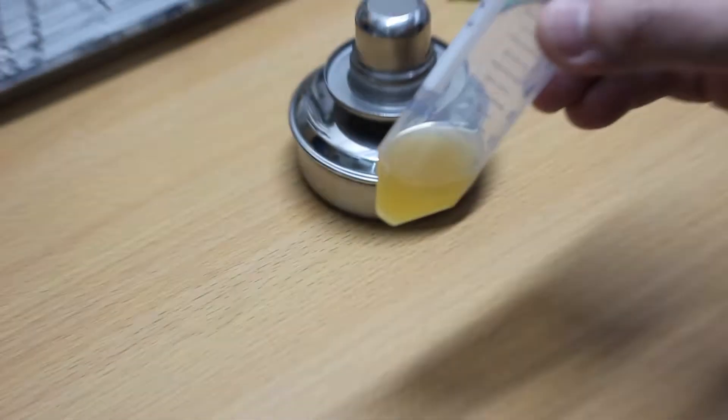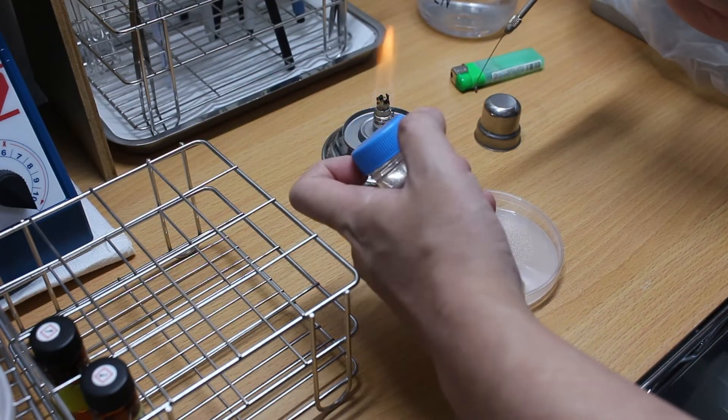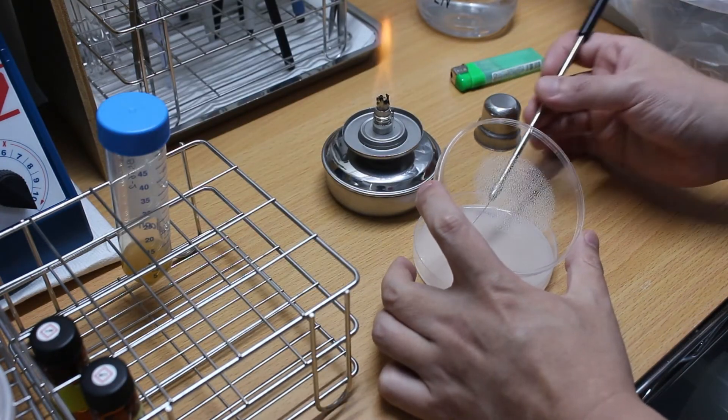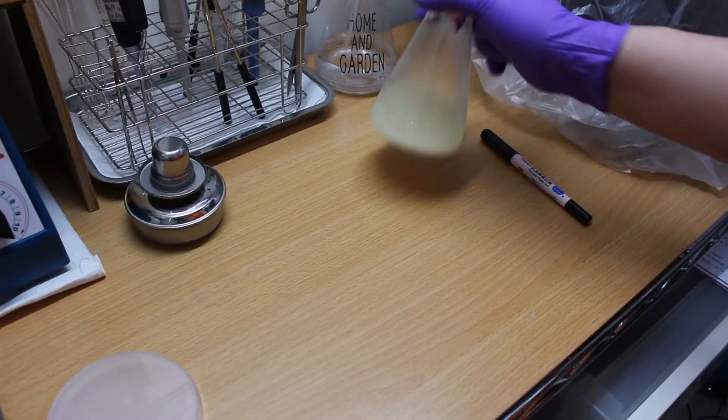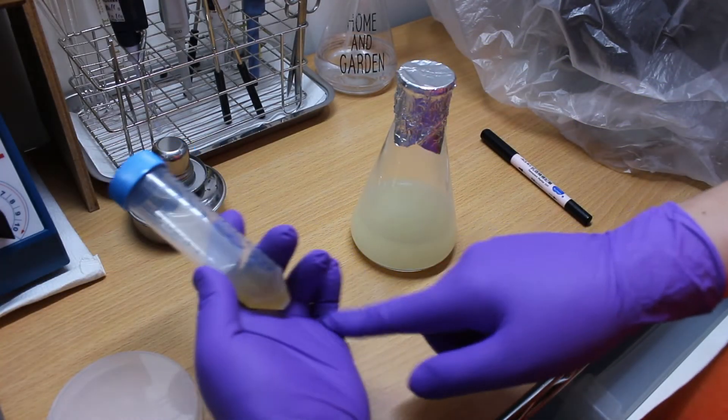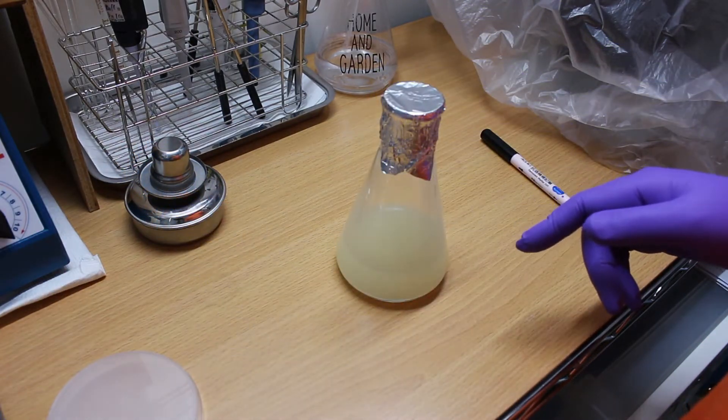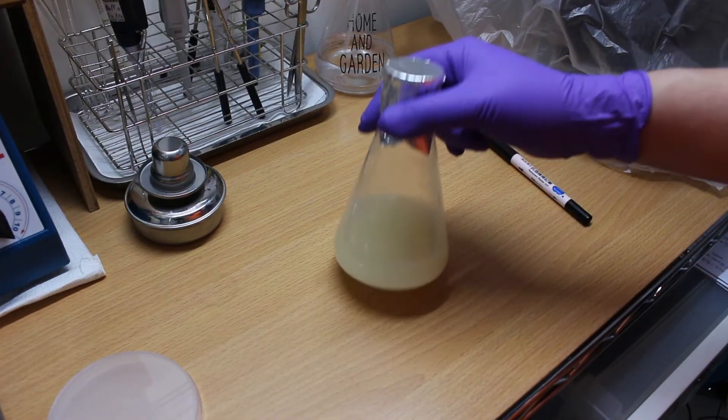So, use an agar plate to confirm that the bacteria are in fact PSB, and then I can start a larger culture. Here, I have increased the 10 milliliters of bacteria culture into 100 milliliters. Of course, you can increase it even more. I'm just demonstrating the principle.